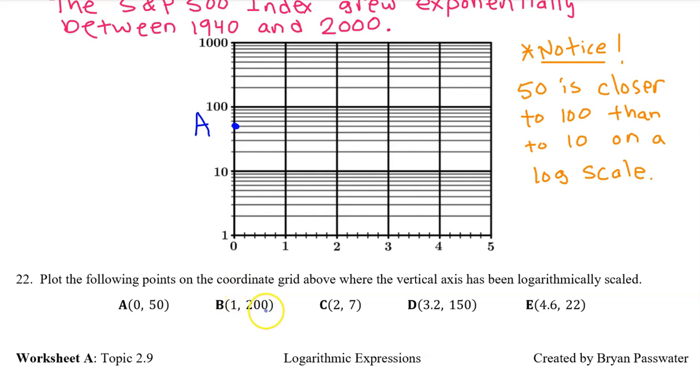1, 200. So here is 1 and then 200 is going to be beyond 100. As we pass 100, we count by hundreds. So it goes 100 and then 200, 300, 400. So 1, 200 is right here and this is point B.